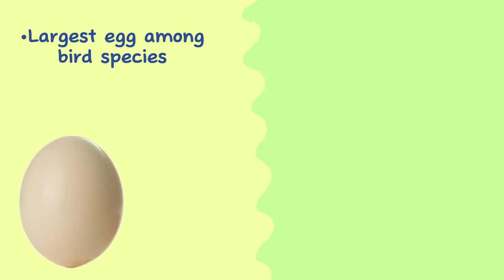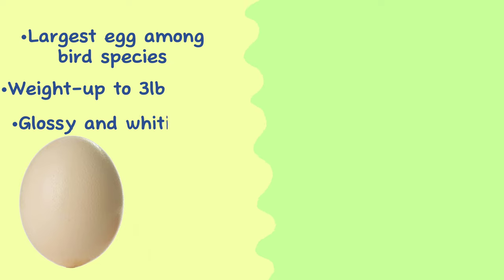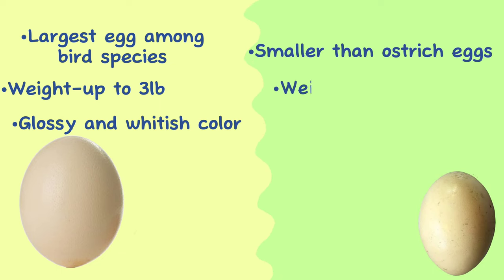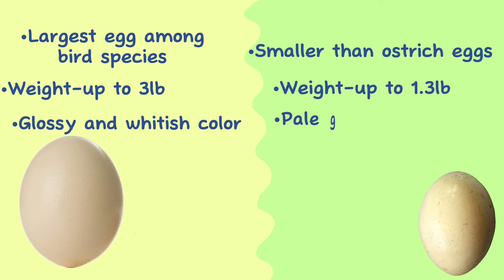Eggs. Ostrich eggs are the largest of any bird species and weigh up to 3 pounds, and are typically glossy and whitish in color. Rhea eggs are also relatively large but smaller than ostrich eggs, weighing up to 1.3 pounds, and have a pale greenish or bluish color.